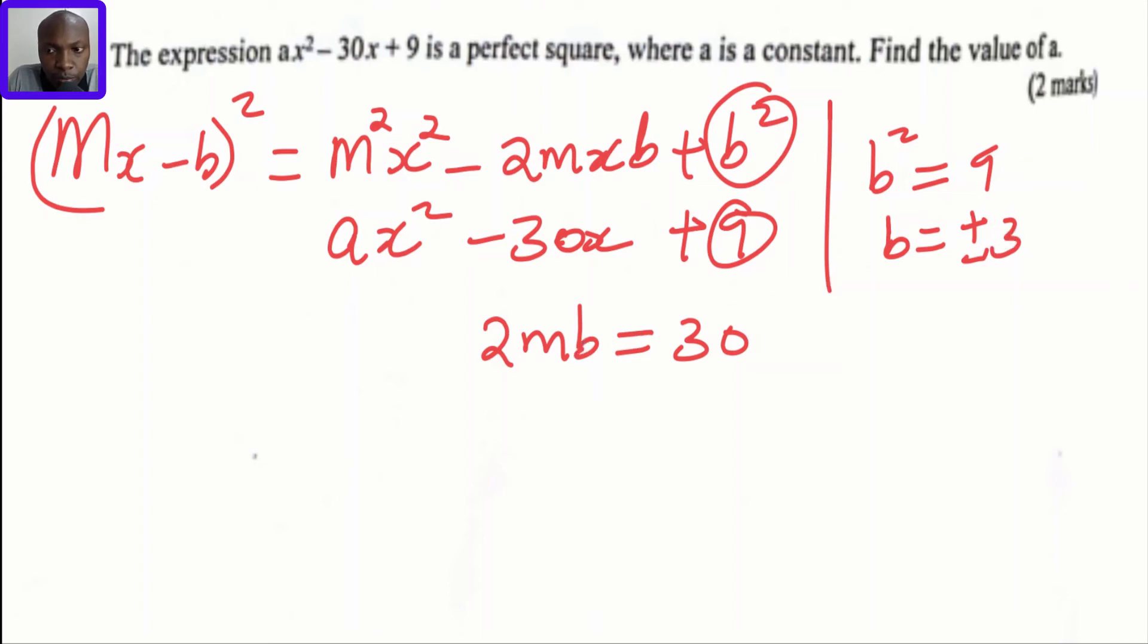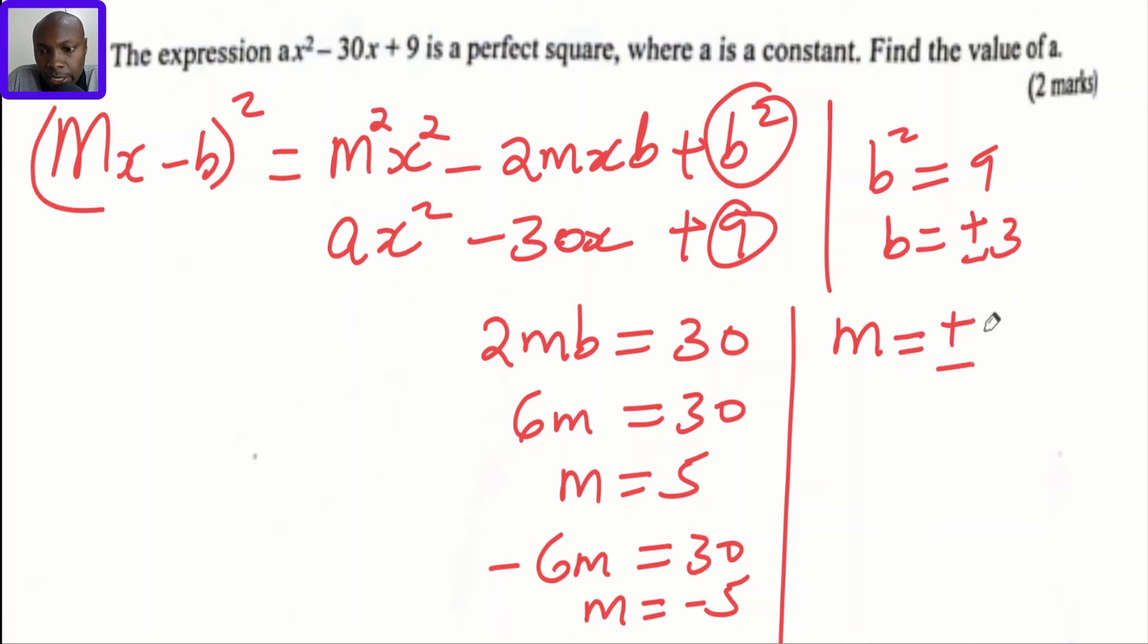If I substitute the value of b, starting with the positive value, I get 6m = 30, so m = 5. The second value of m is when I substitute negative 3: -6m = 30, so m = -5. The value of m is therefore ±5.